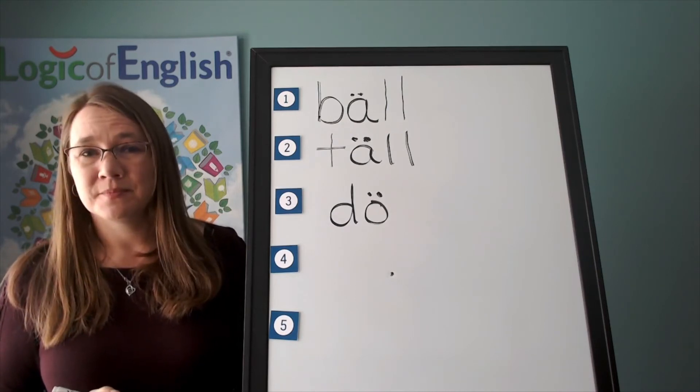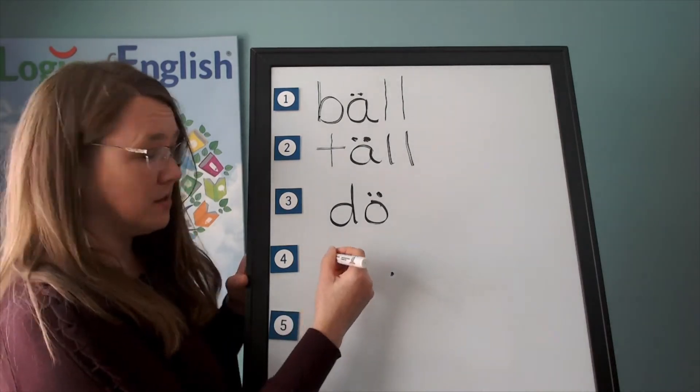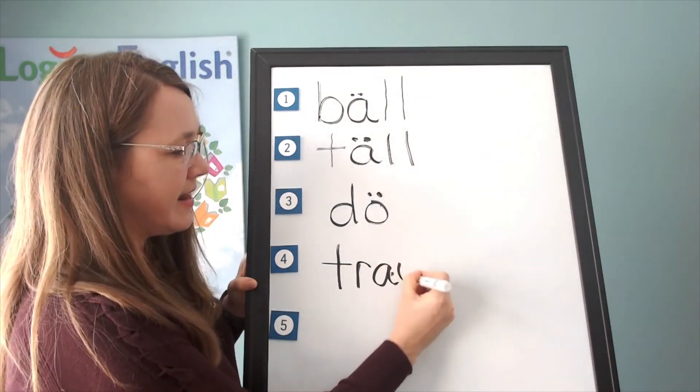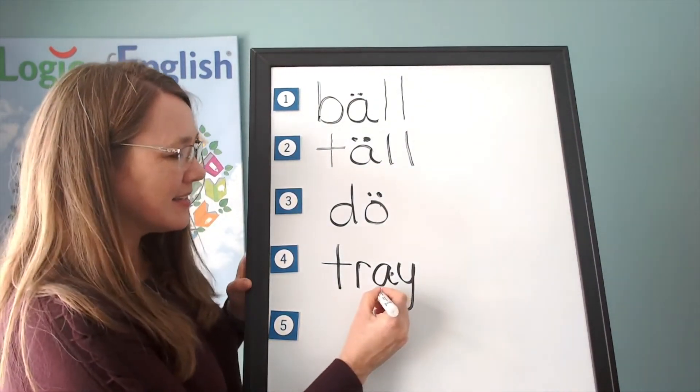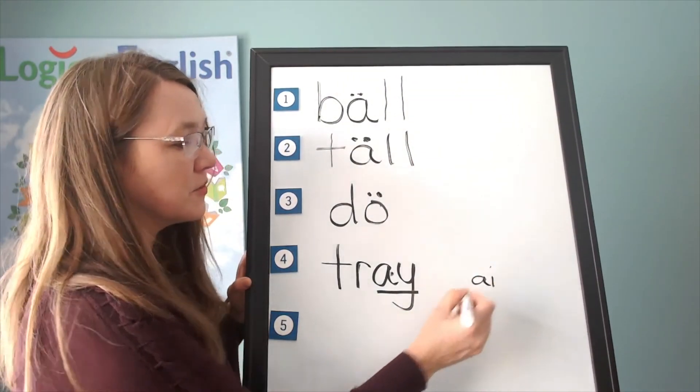Go ahead and write tray. Sound it out as you write it. Now help me to write it. T, er, A. And how do we mark it? Excellent. Well, underline the A.